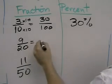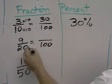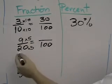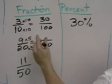I can make 9 twentieths have a denominator of 100 by multiplying the numerator and the denominator by 5. 20 times 5 is 100. 9 times 5 is 45.